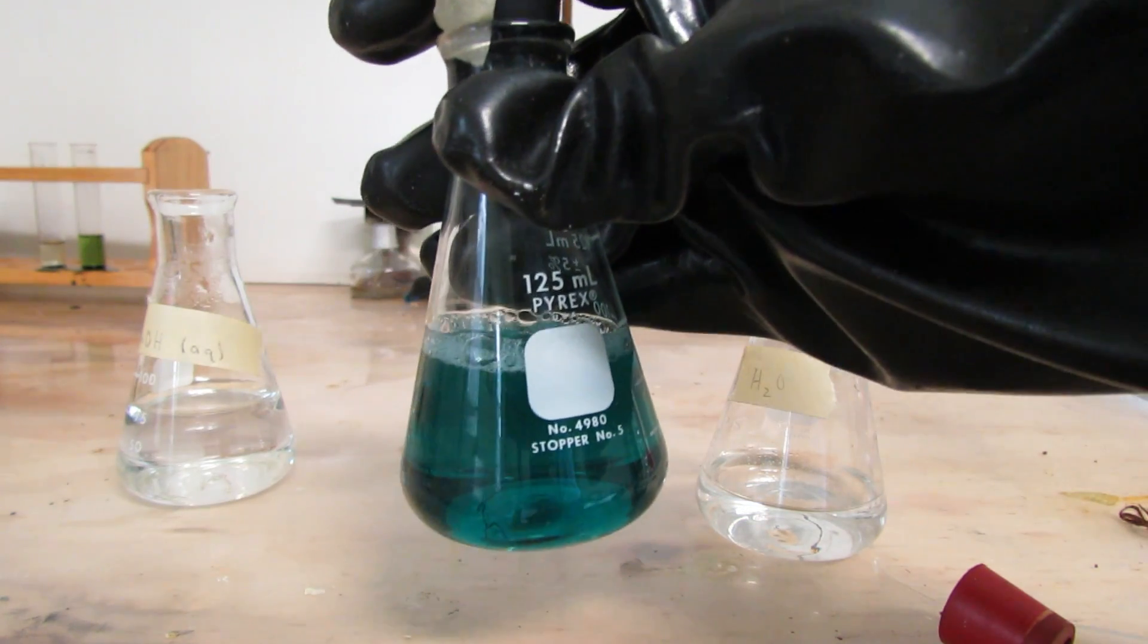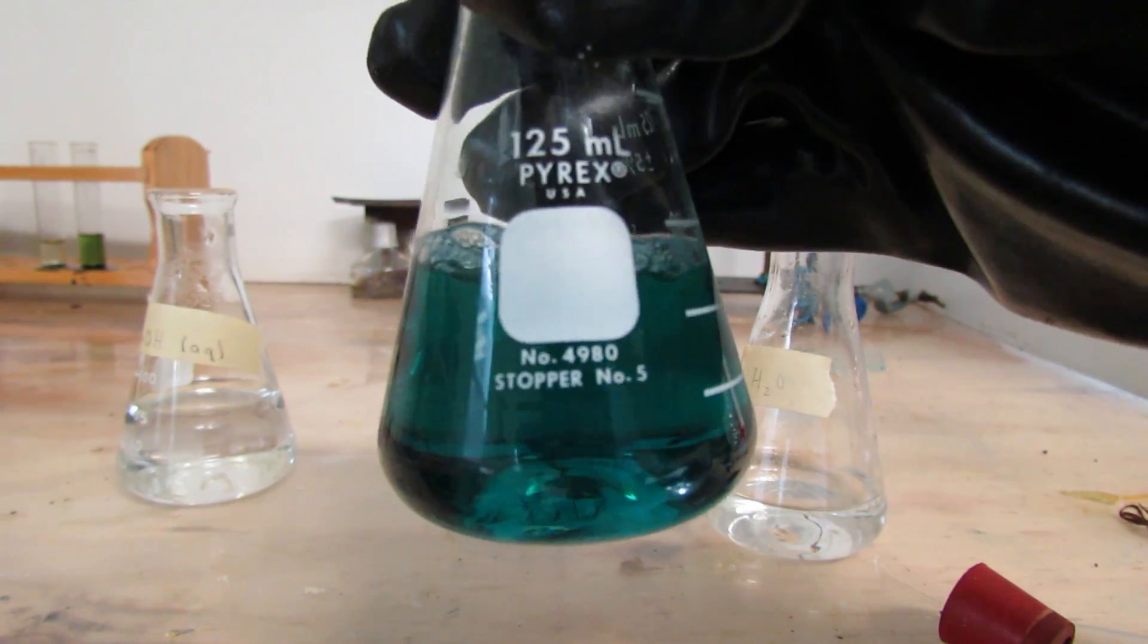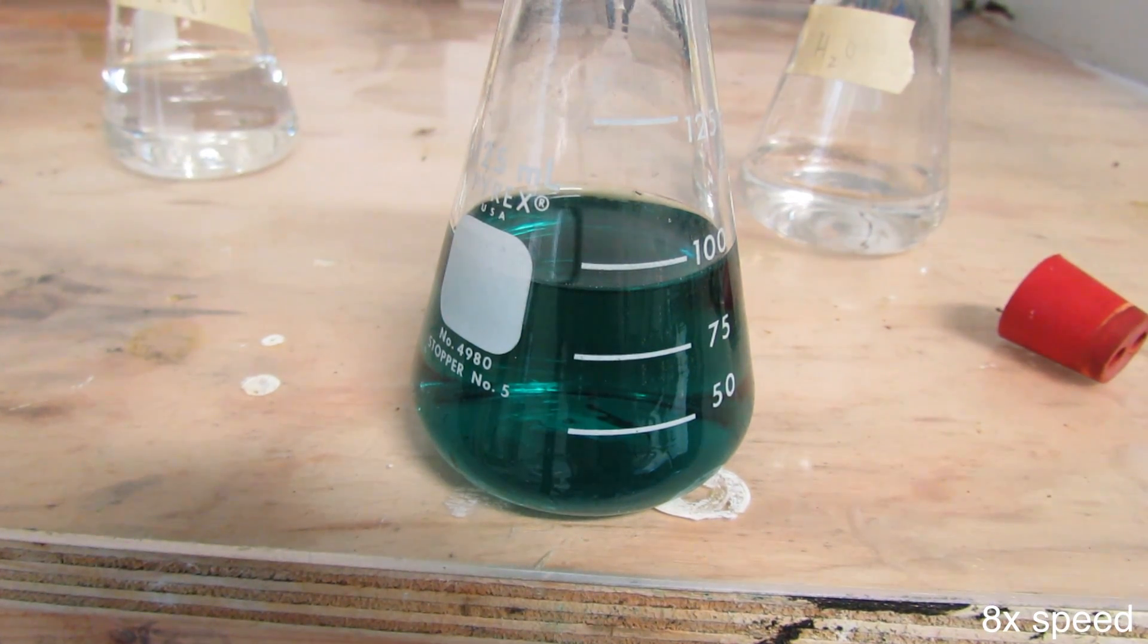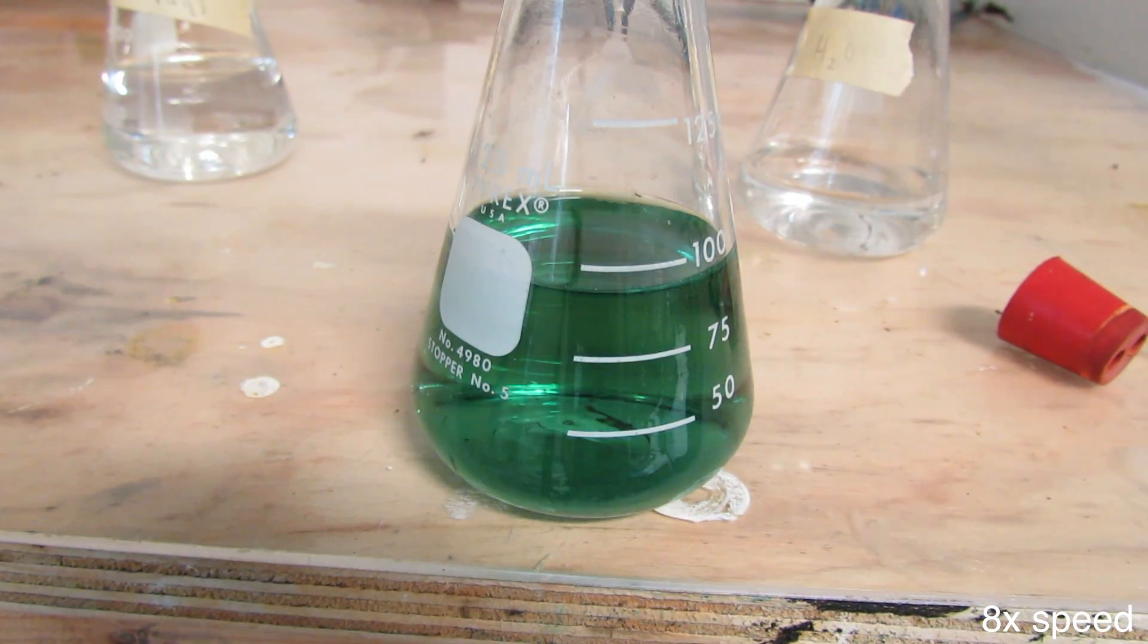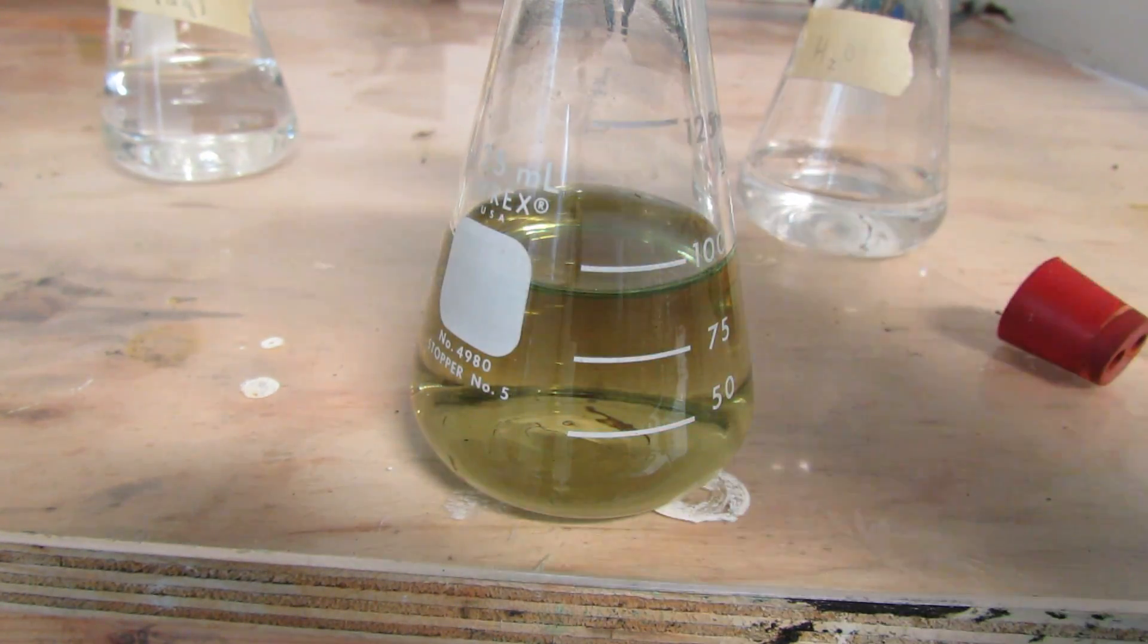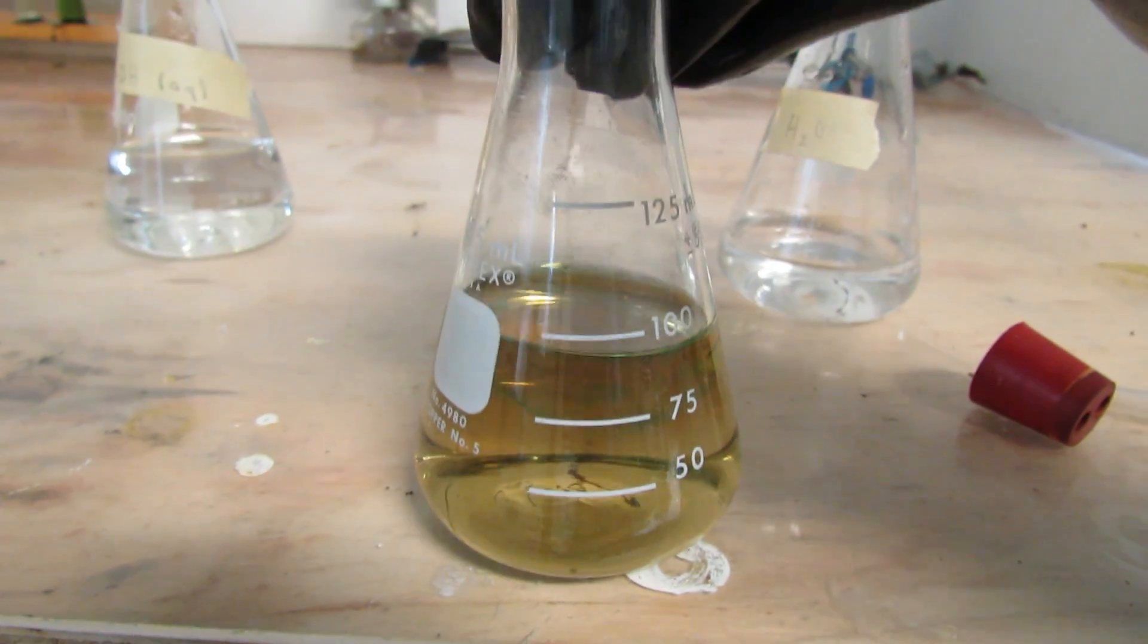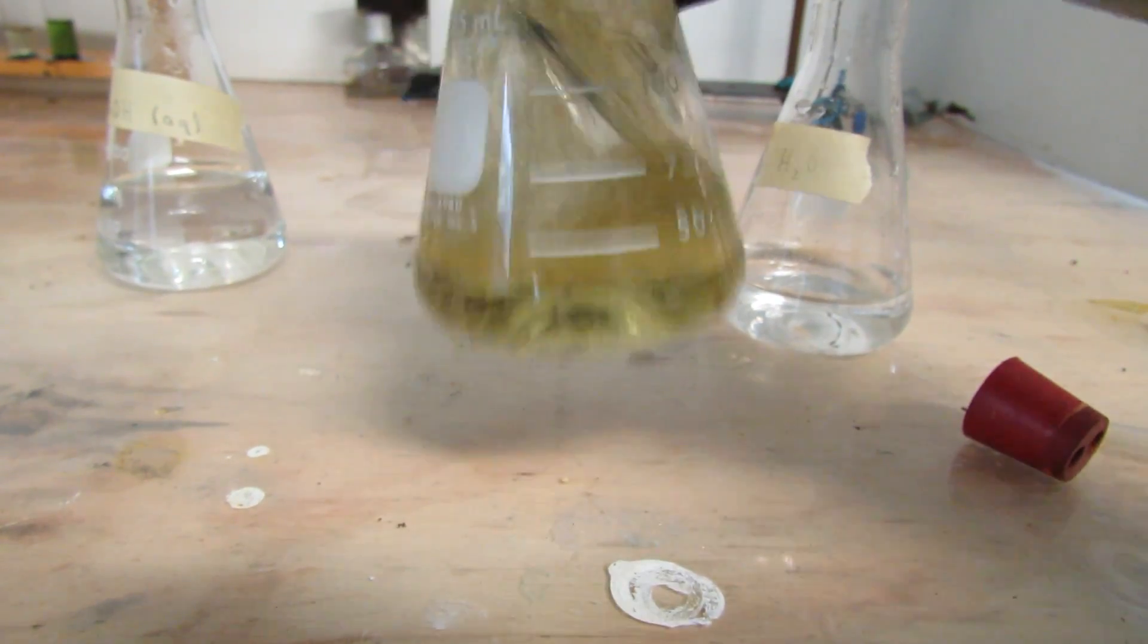As you can see, it turns back to the blue color of the methylene blue. Now, if we let this sit, it will eventually go back to the brown color of the syrup. Once this happens, we can just shake the flask again and the reaction starts over.